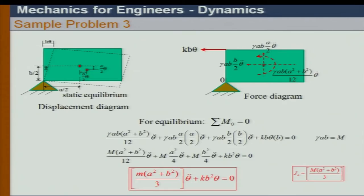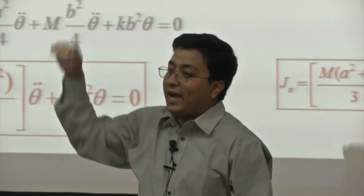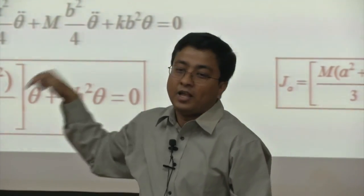Solving this problem, what I ultimately get is M(A² + B²)/3, which is the mass moment of inertia about point O. For a bar it was M·L²/3, so for this plate with two dimensions A and B it is M·A²/3 + M·B²/3. We can verify this by logic or by transferring all three inertia forces to point O.